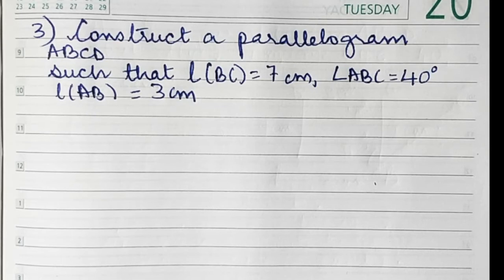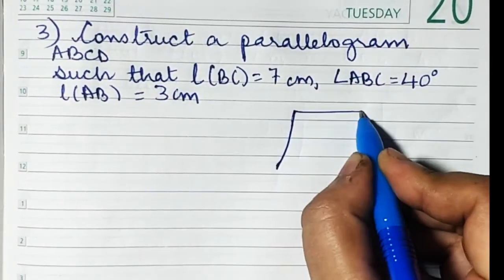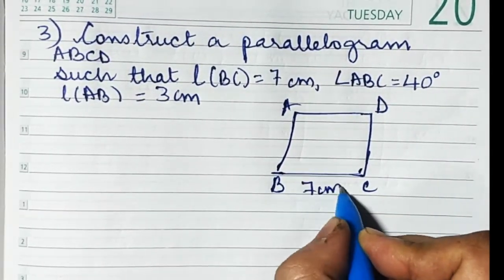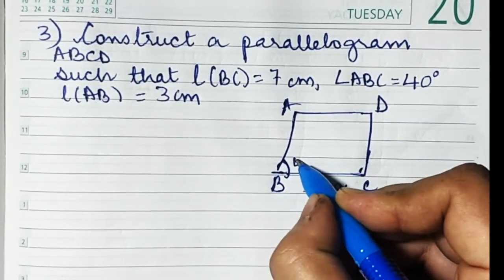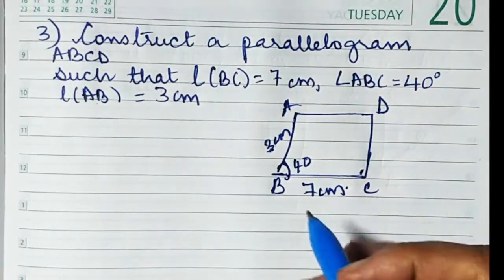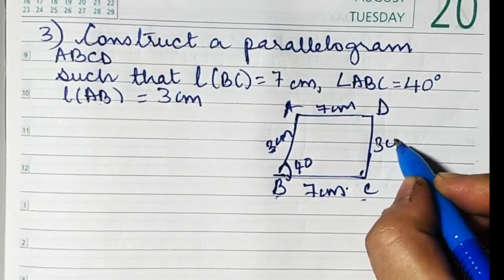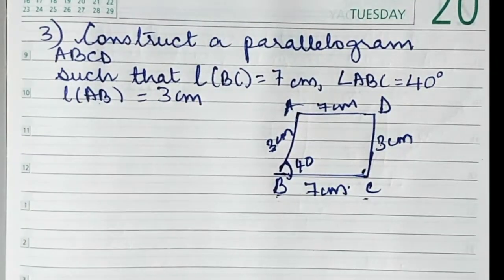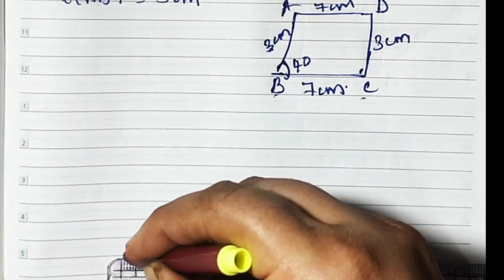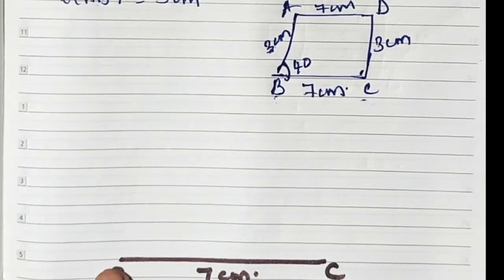Now sum number three: construct a parallelogram ABCD such that BC is 7 centimeters, angle ABC is 40 degrees, and AB is 3 centimeters. Since it's a parallelogram, opposite sides are congruent — BC is 7 means AD is 7, and AB is 3 means DC is 3. Start by drawing the baseline BC of 7 centimeters.